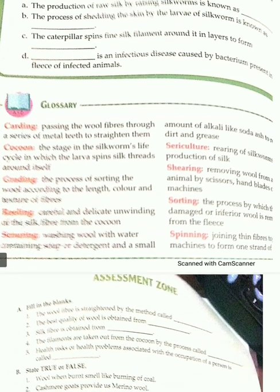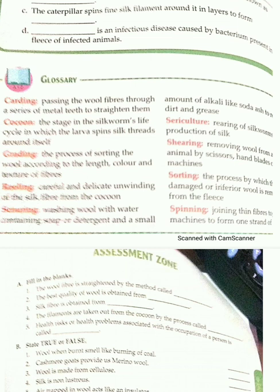The process of sorting the wool according to the length, color, texture, and fiber is called grading. Then reeling — careful and delicate unwinding of silk fiber from the cocoon is called reeling.